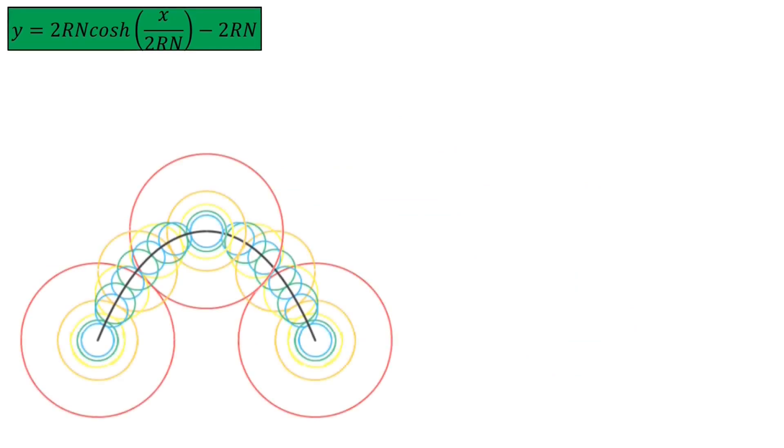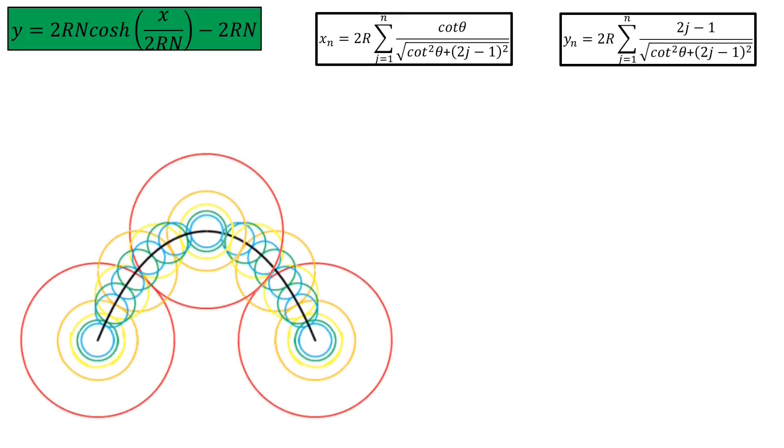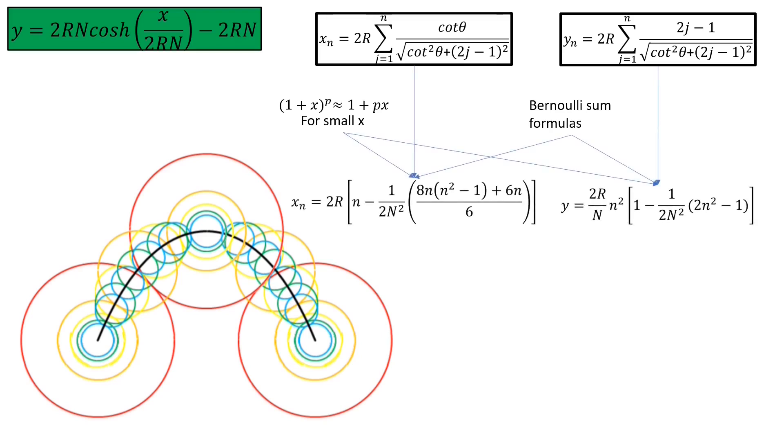From the finite sums for XN and YN, we can obtain small angle approximations without an integral by using this approximation. 1 plus X to the power P is approximately equal to 1 plus P times X, where X is small. In this limit, we dissolve the negative one-half power, that is the square root in the denominator of the sums, and stand a chance of evaluating the sums as a combination of Bernoulli sums.